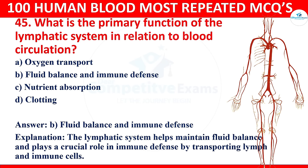Question 46: Which blood vessel carries deoxygenated blood from the heart to the lungs for oxygenation? Options: pulmonary artery, pulmonary vein, inferior vena cava, or aorta. The correct answer is the pulmonary artery. The pulmonary artery carries deoxygenated blood from the right ventricle of the heart to the lungs for oxygenation.